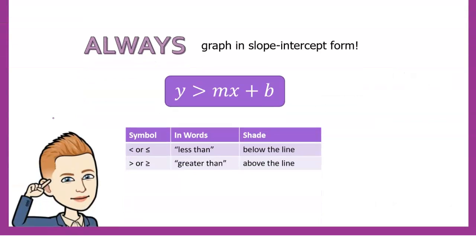For this shading method to work, the inequality always needs to be in slope-intercept form: y = mx + b, with y by itself on one side. The reason is that we're looking at the y-values and asking whether the alligator is eating y or eating the line. If y isn't isolated, we can't use this rule. So: always get y by itself first. Less than means shade below the line; greater than means shade above the line.